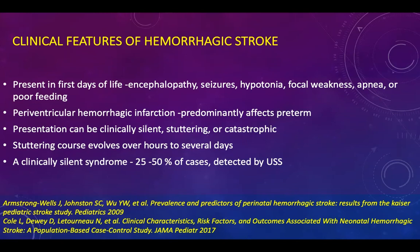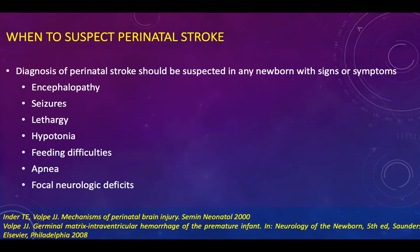Hemorrhagic stroke presents in early days of life with encephalopathy, seizures, hypotonia, focal weakness, apnea, or poor feeding. Periventricular hemorrhagic infarction predominantly affects preterm infants, but presentation can be either silent, stuttering, or catastrophic. Stuttering evolves over hours to several days. A clinically silent syndrome can be present in up to 50% of cases detected by cranial ultrasound scan.